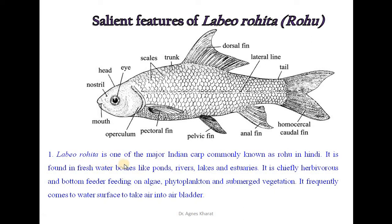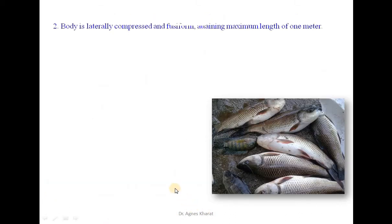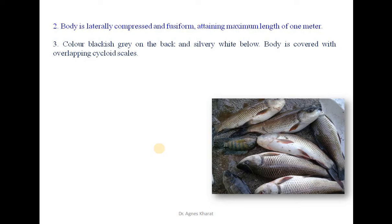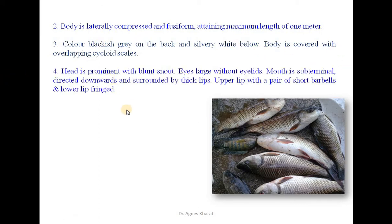Labeo rohita is one of the major Indian carps, commonly known as Rohu in Hindi. It is found in freshwater bodies like ponds, rivers, lakes, and estuaries. It is chiefly herbivorous and a bottom feeder, feeding on algae, phytoplankton, and submerged vegetation. It frequently comes to the water surface to take air into its air bladder. The body is laterally compressed and fusiform, attaining a maximum length of 1 meter. The colour is blackish-grey on the back and silvery white below. The body is covered with overlapping cycloid scales, and the head is prominent with a blunt snout.